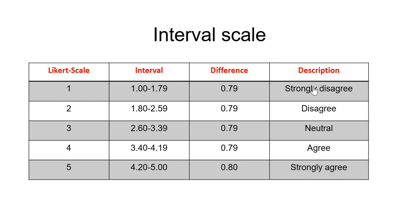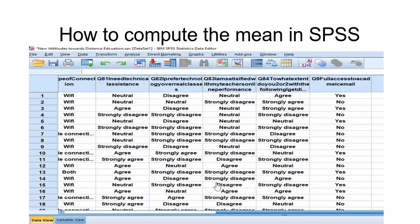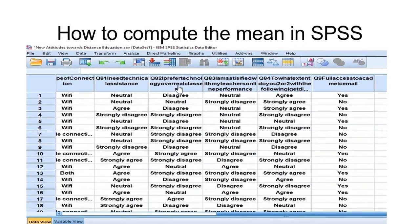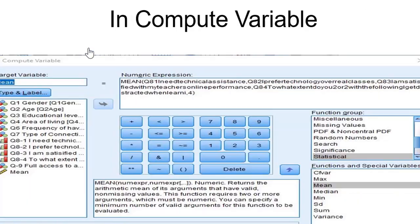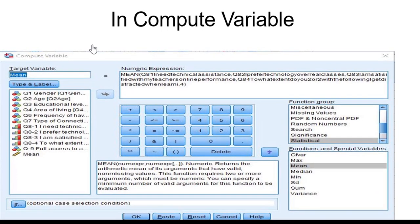In SPSS, for this questionnaire, we have four items on the Likert scale — questions one, two, three, and four. To analyze this, we are going to click on Transform, and we'll get another window which is Compute Variable.